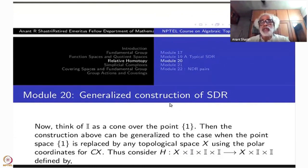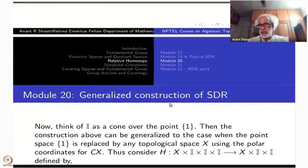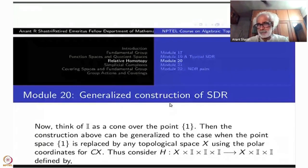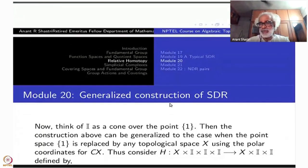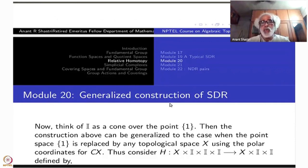Think of the closed interval [0,1] as a cone over the point {1}. What is a cone over anything? By definition it is X×I with X×{0} identified to a single point. If X is the singleton {1}, then X×I is the interval, and there is no further identification since the endpoint is just the singleton {1}. So think of the interval as a cone over {1}.